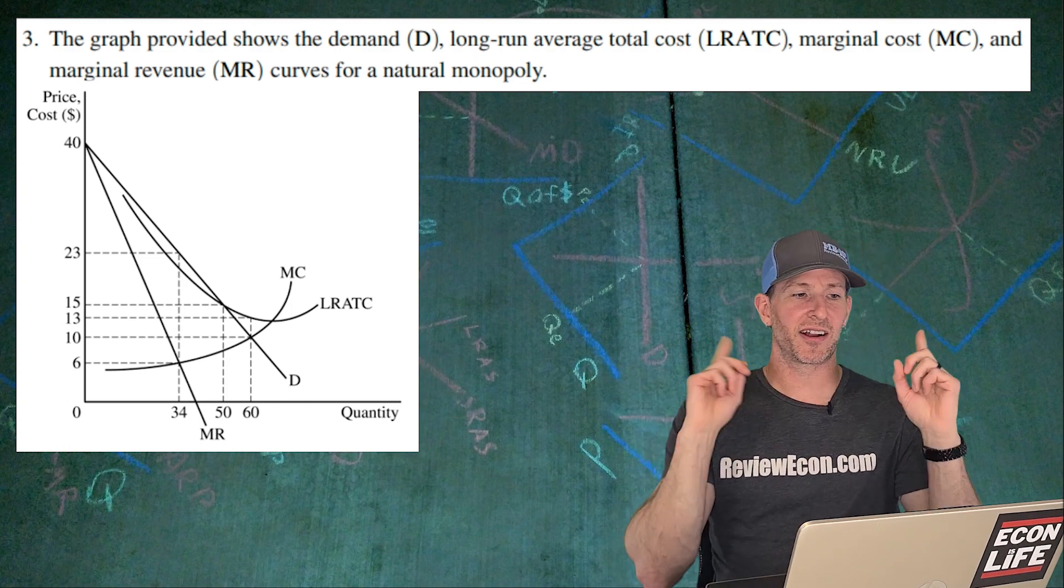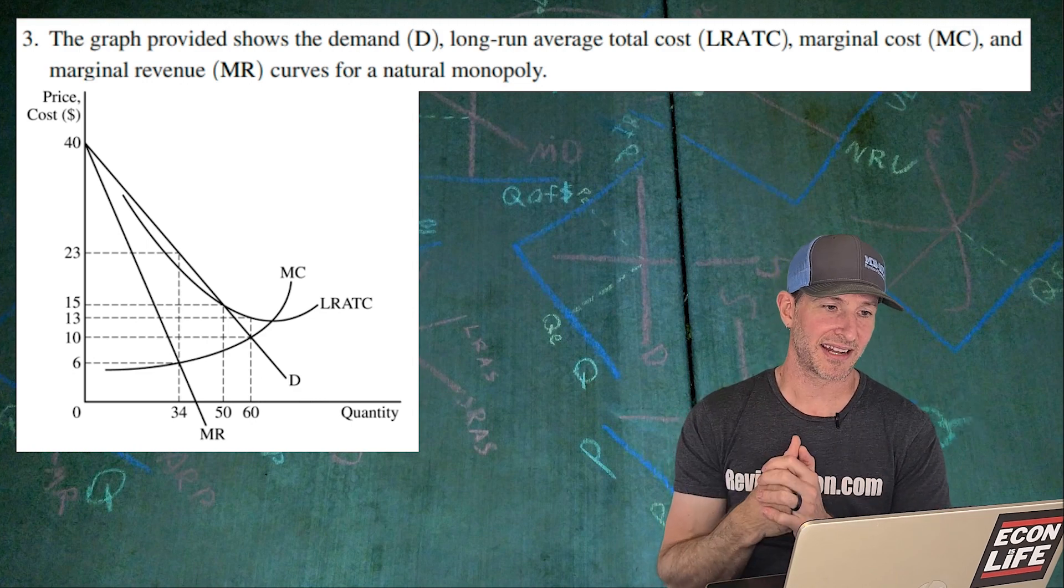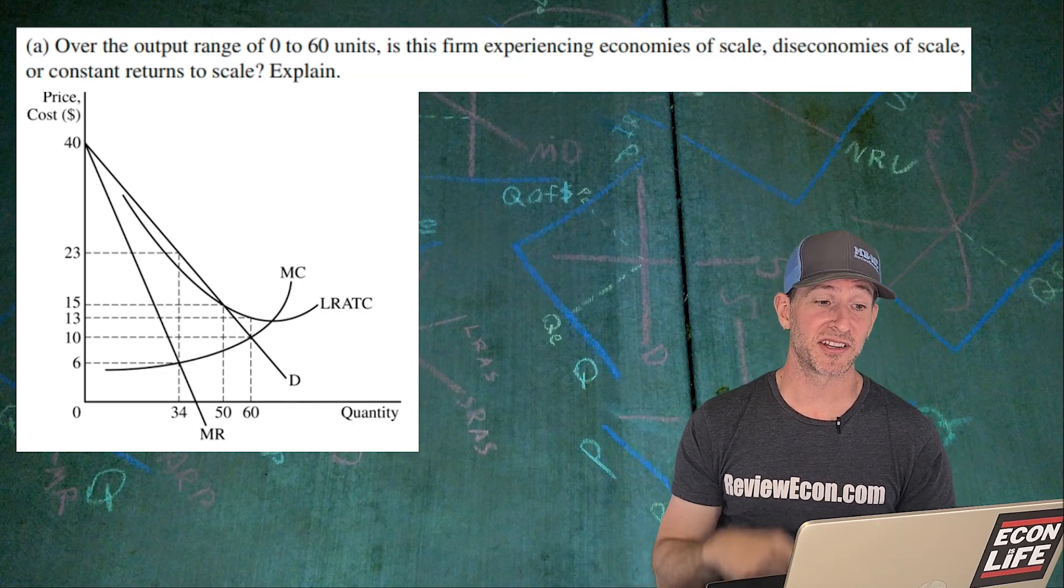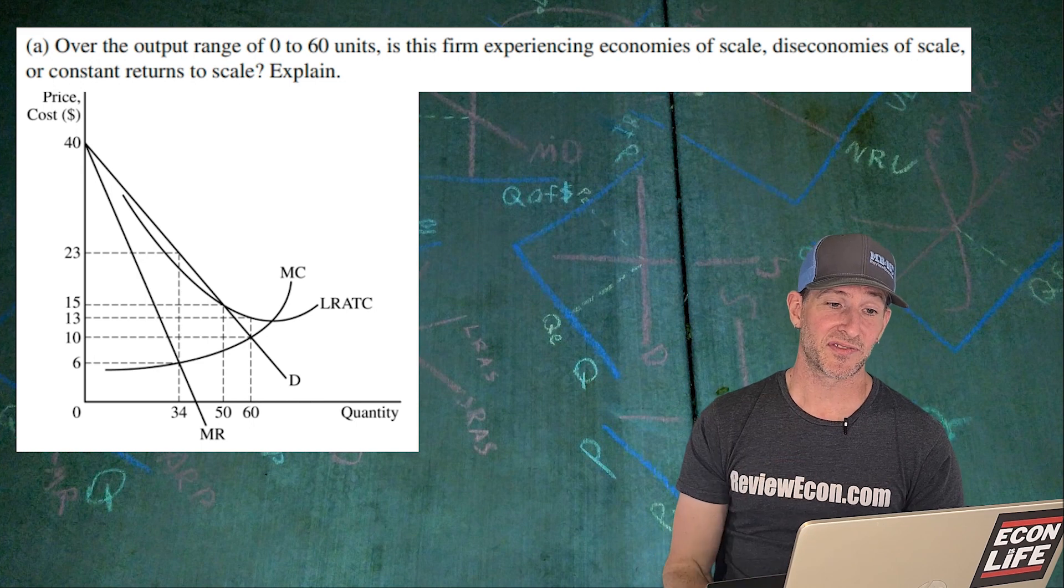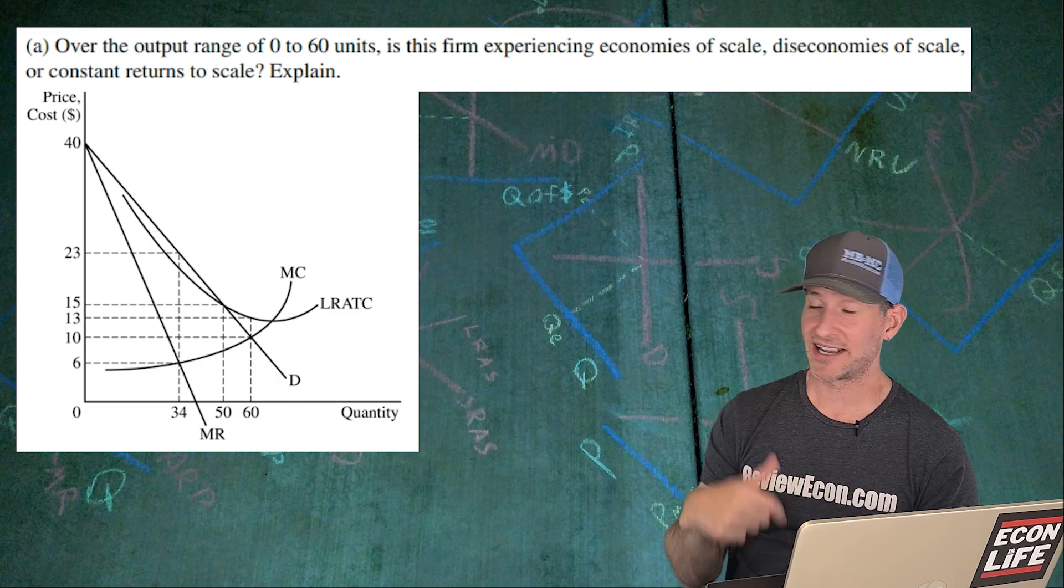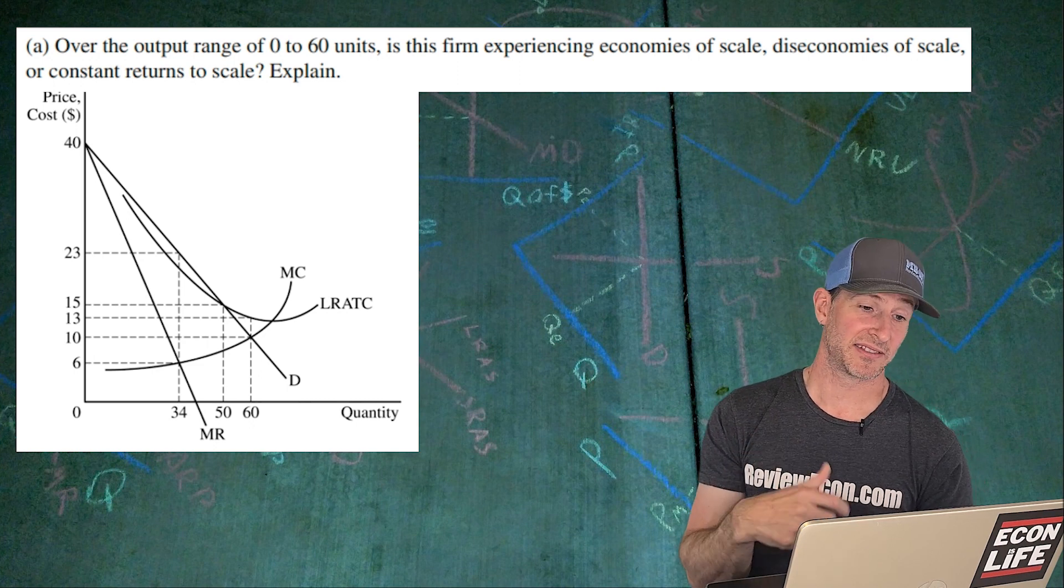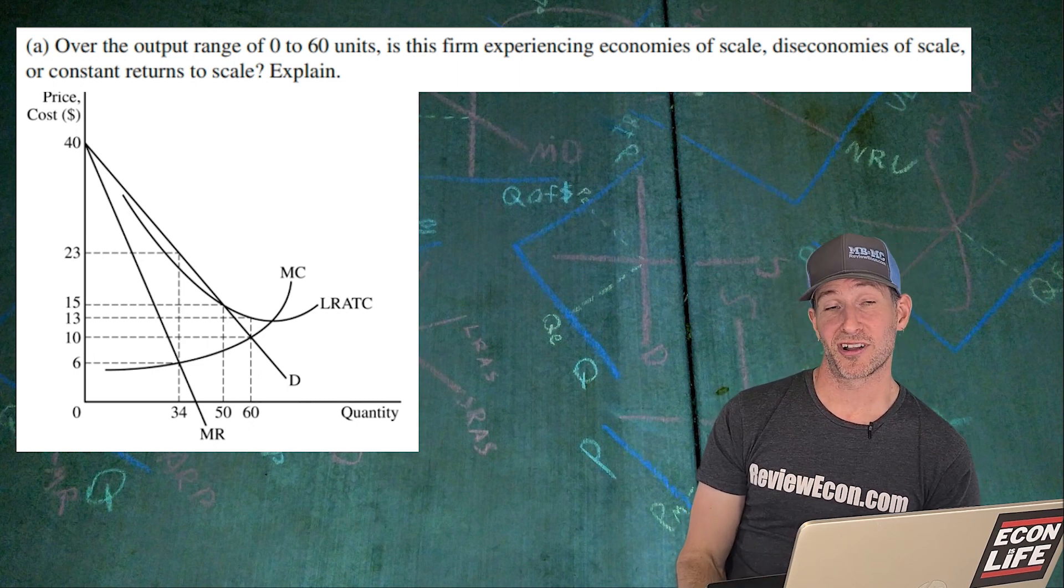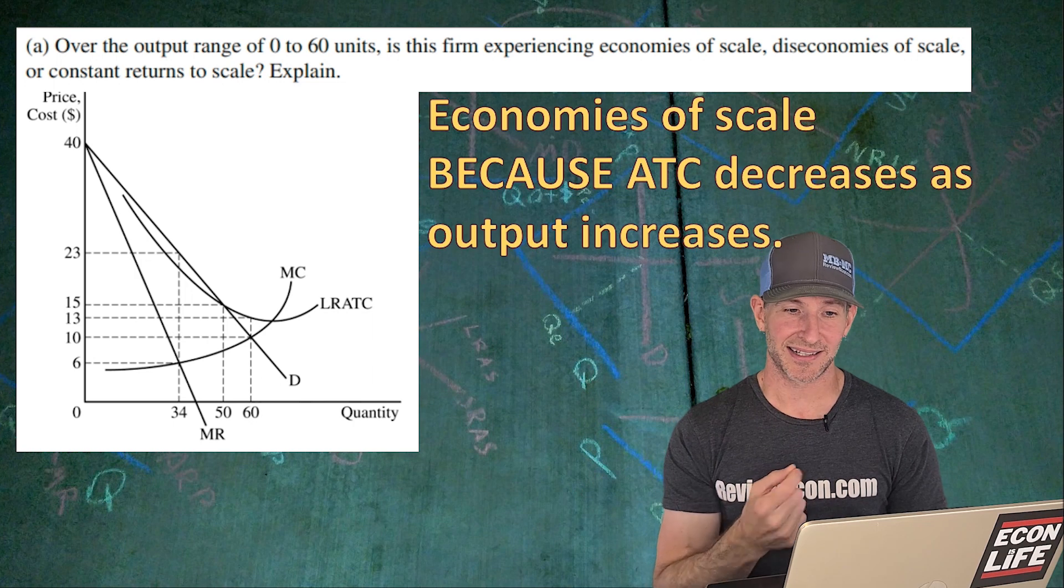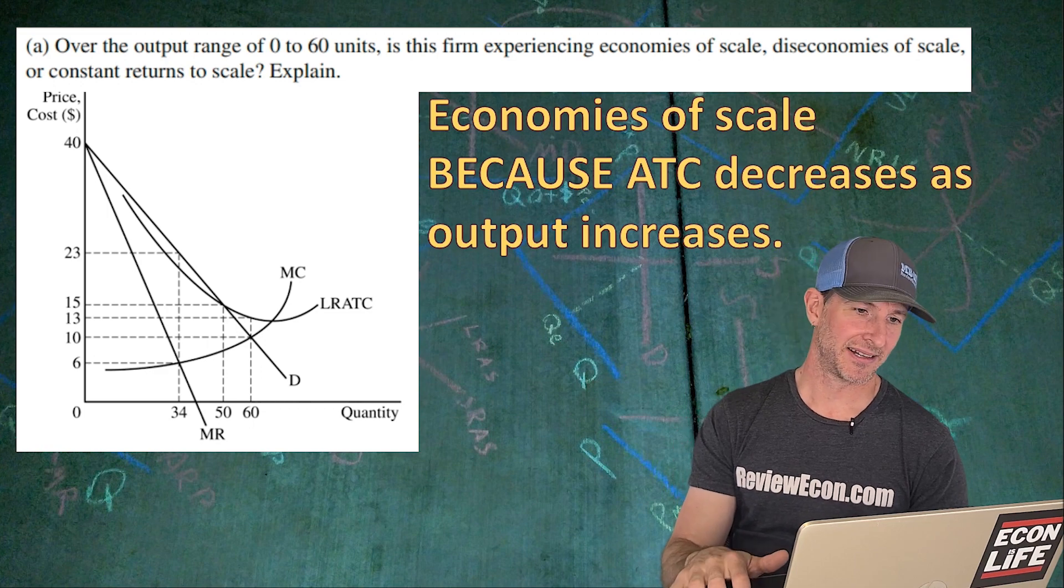On to the third question, our last question for the year. Let's get through it. The graph here shows demand, long run average total cost, marginal cost, and marginal revenue. This is actually a natural monopoly graph. That's what we got here. So over the output range of zero to 60 units, is this firm producing, experiencing economies of scale, diseconomies of scale, or constant returns to scale? Explain. Well, as you can see, that average total cost curve for all of those units is actually downward sloping. It doesn't start to upward slope until the average total cost or long run average total cost curve intersects that marginal cost curve. And so economies of scale because the ATC decreases as output increases through all of those 60 units.